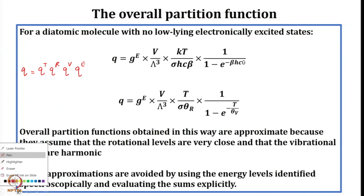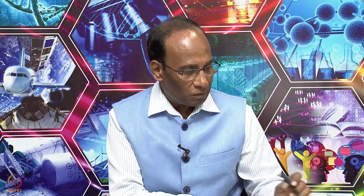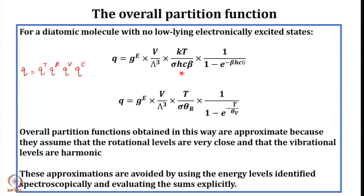The translational contribution to the partition function is given by V divided by lambda cubed, where V is the volume of the container and lambda is the thermal wavelength. The rotational contribution depends on whether the molecule is linear or non-linear. For simplicity, let us consider a linear molecule, for which the expression is KT over sigma·hcB, where K is Boltzmann's constant, T is absolute temperature, and sigma is the symmetry number.